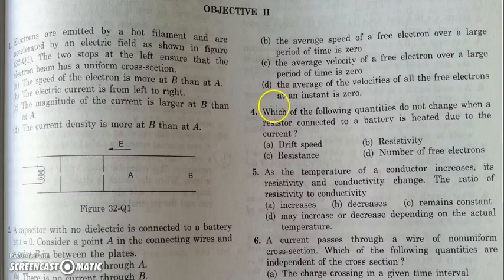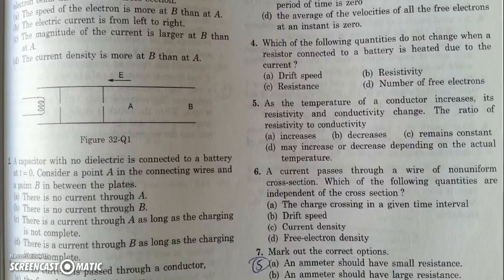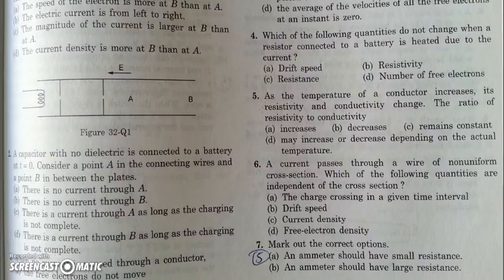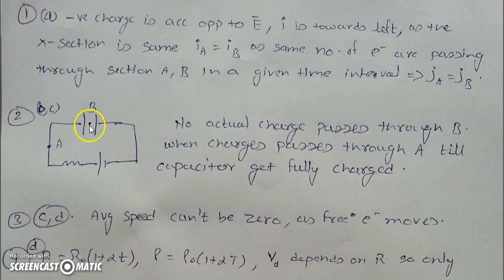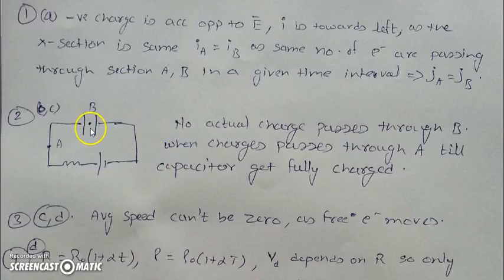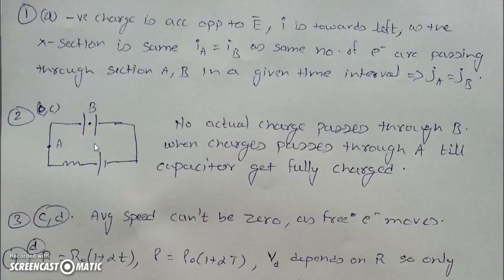In the next question, a capacitor with no dielectric is connected to a battery at t=0. Point A is on the wire and point B is between the plates. No actual current will pass through B since no charges are flowing through it, but actual current flows through the wire at point A. This actual current will also stop when the capacitor becomes fully charged, so initially there is current through A and it becomes zero when fully charged.